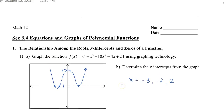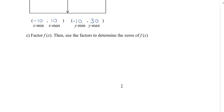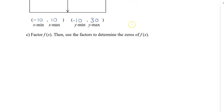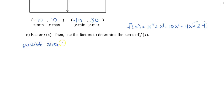Next we're going to compare this by factoring the function. We have f of x equal to x to the 4 plus x cubed minus 10x squared minus 4x plus 24. We look at the last number to determine our possible zeros — the factors of 24. So we have plus or minus 1, plus or minus 2, plus or minus 3, plus or minus 4, plus or minus 6, plus or minus 8, plus or minus 12, and plus or minus 24.